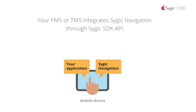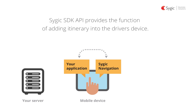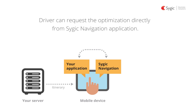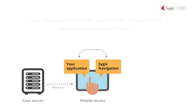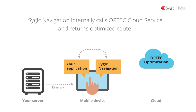How does it work? Your system, represented by your application on a mobile device, is integrated with Sygic Navigation. Your server system sends the desired itinerary to Navigation. A driver can request the optimization directly from Sygic Navigation. Navigation internally calls the Ortec route service, which returns an optimized route.